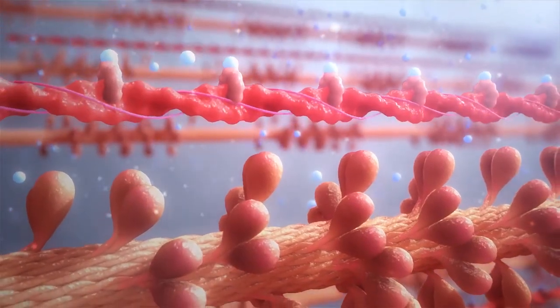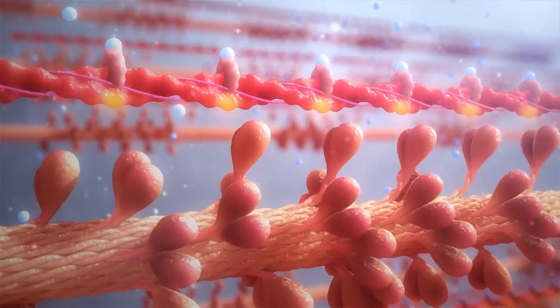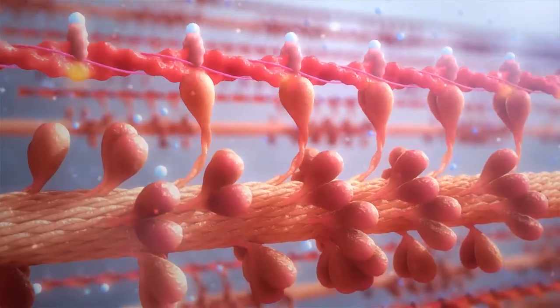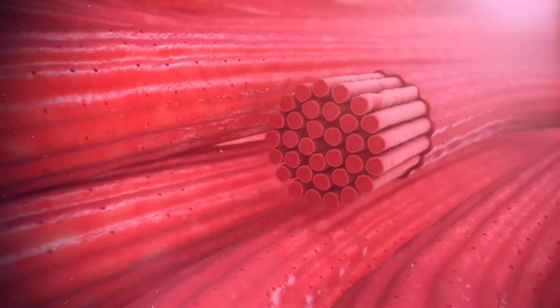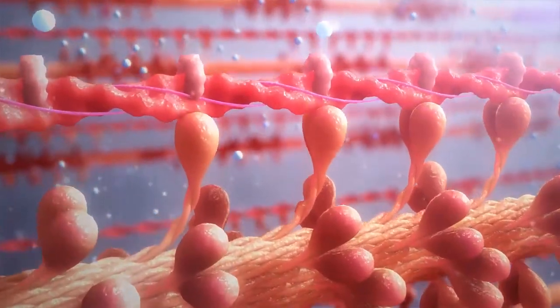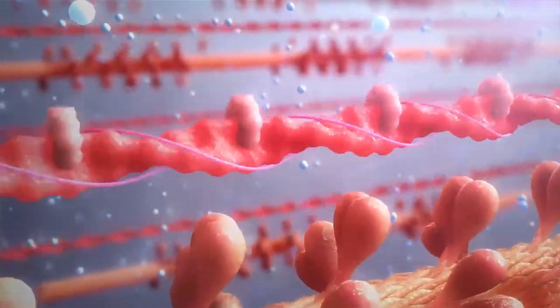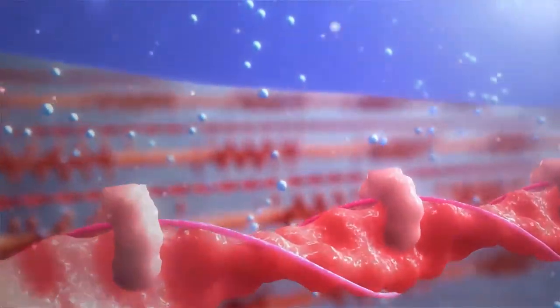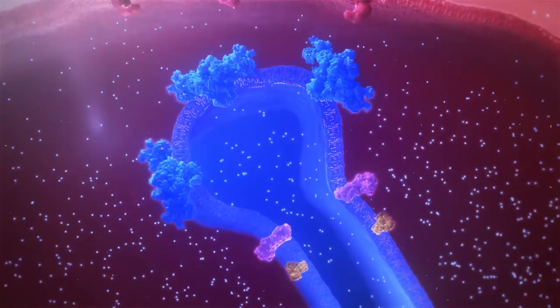This ultimately exposes cross-bridge binding sites on the actin filaments. Cross-bridge cycling ensues, generating force by thick and thin filament movement. To initiate relaxation, calcium ions are pumped back into the sarcoplasmic reticulum.